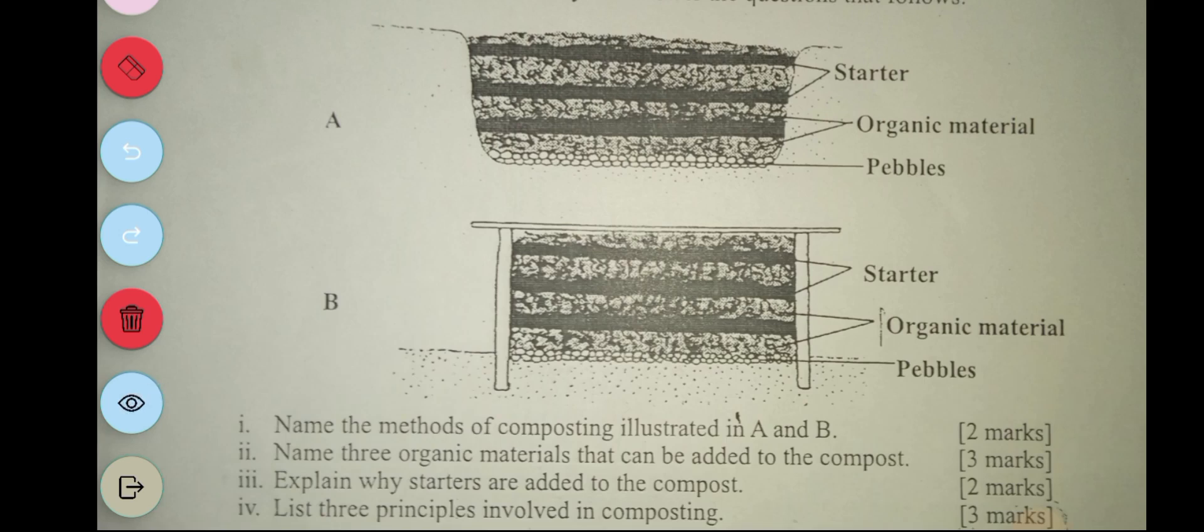Part one says: name the methods of composting illustrated in A and B. So these are actually methods of preparing compost. So the first one is the pit method. You can see that the compost materials are below the level of the ground.